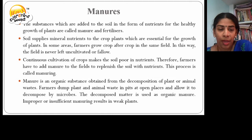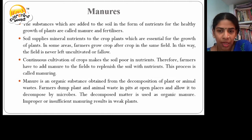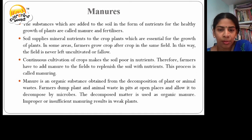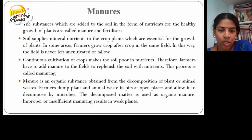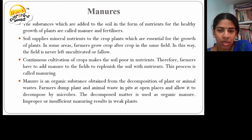Manure is an organic substance obtained from the decomposition of plants or animal waste. Farmers dump plants and animal waste in pits at open places and allow it to decompose by microbes. The decomposed matter is used as organic manure. Improper or insufficient manuring results in weak plants.